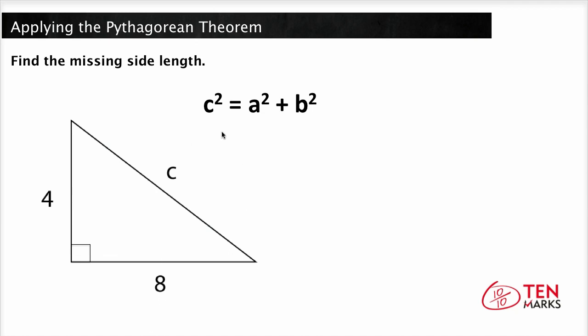So with c squared equaling a squared plus b squared, we can plug in 4 and 8 for a and b. So c squared equals 4 squared plus 8 squared. Now 4 squared is 4 times 4 and 8 squared is 8 times 8. So we get c squared equals 16 plus 64, which equals 80.